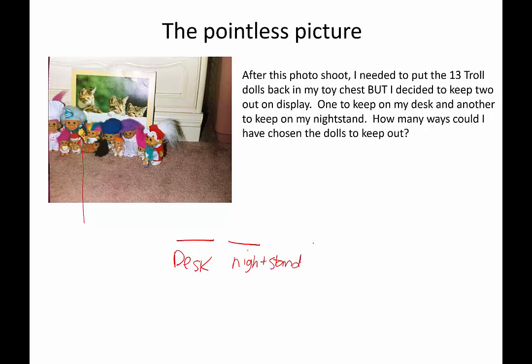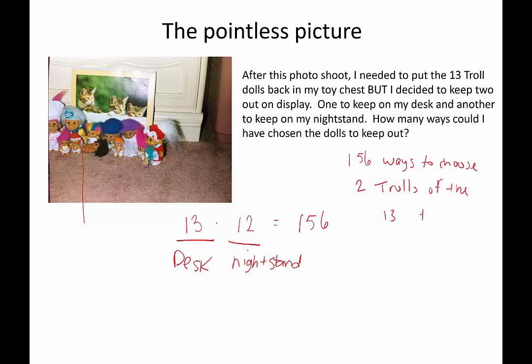Order matters because they're going to different places — one to the desk, one to the nightstand. I choose one for my desk: I have 13 options. Once one is chosen, I'm down to 12 for the nightstand. So 13 times 12 equals 156. There were 156 ways to choose two troll dolls of the 13 to display. It's just applying the counting principle — 13 options, then 12 options, multiplied together.